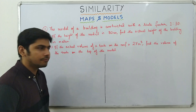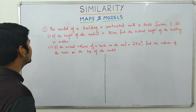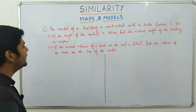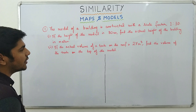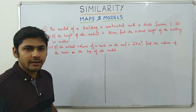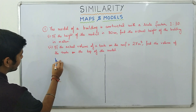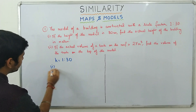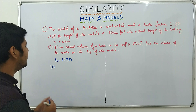Beginning with the first sum. The model of a building is constructed with a scale factor 1 : 30. Number 1: if the height of the model is 80 centimeters, find the actual height of the building in meters. Number 2: if the actual volume of a tank on the roof is 27 meter cube, find the volume of the tank on the top of the model. We have the scale K = 1 : 30. Let's look at number 1 — if the height of the model is 80 centimeters, find the actual height of the building in meters.